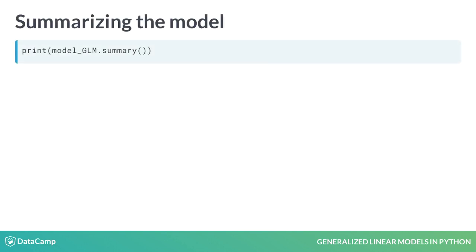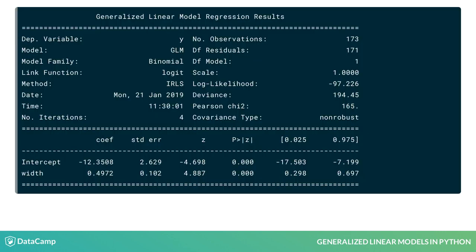To view the results of the model fit, we use the summary method, which provides the main information on model fit, such as the model description, model statistics such as log likelihood and deviance, and estimated model parameters with their corresponding statistics. The estimated parameters are given by coef with their standard error, z-scores, p-values, and 95% confidence intervals.